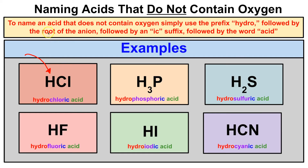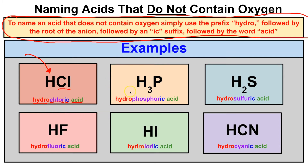So how do we name acids that do not contain oxygen? The rule is: to name an acid that does not contain oxygen, simply use the prefix hydro, followed by the root of the anion that the hydrogen is bonded to, followed by the suffix -ic, followed by the word acid. For example, HCl has no oxygen, so it gets the prefix hydro, the anion is chloride, the root is chlor, we add the -ic ending, and we have hydrochloric acid — the stuff in our stomachs.